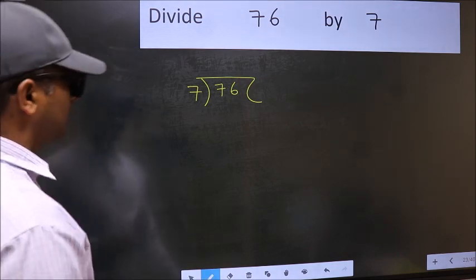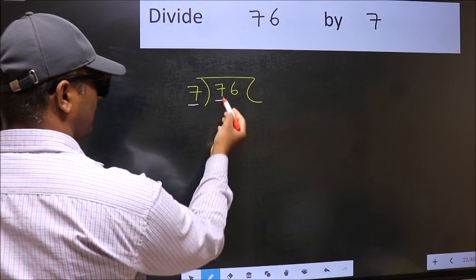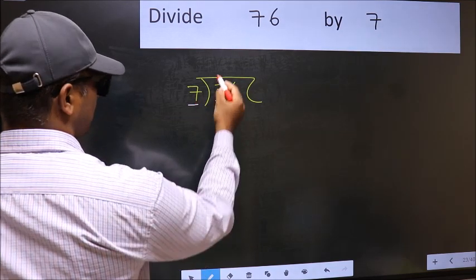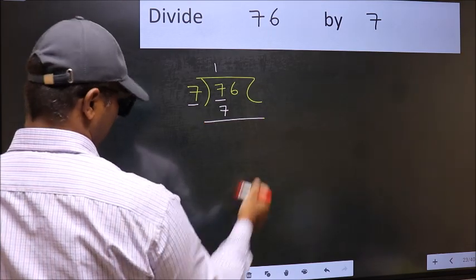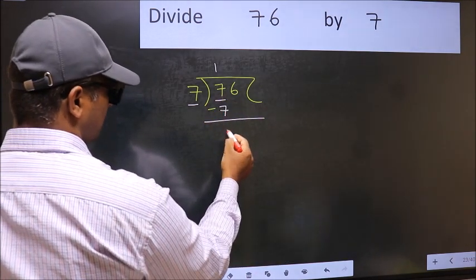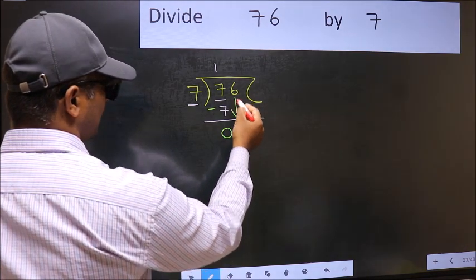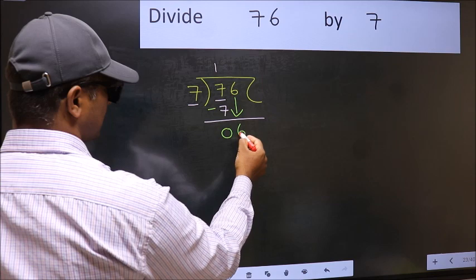Next. Here we have 7 and here also 7. When do we get 7 in 7 table? 7 once 7. Now you should subtract. 7 minus 7, 0. After this, bring down the beside number. So 6 down.